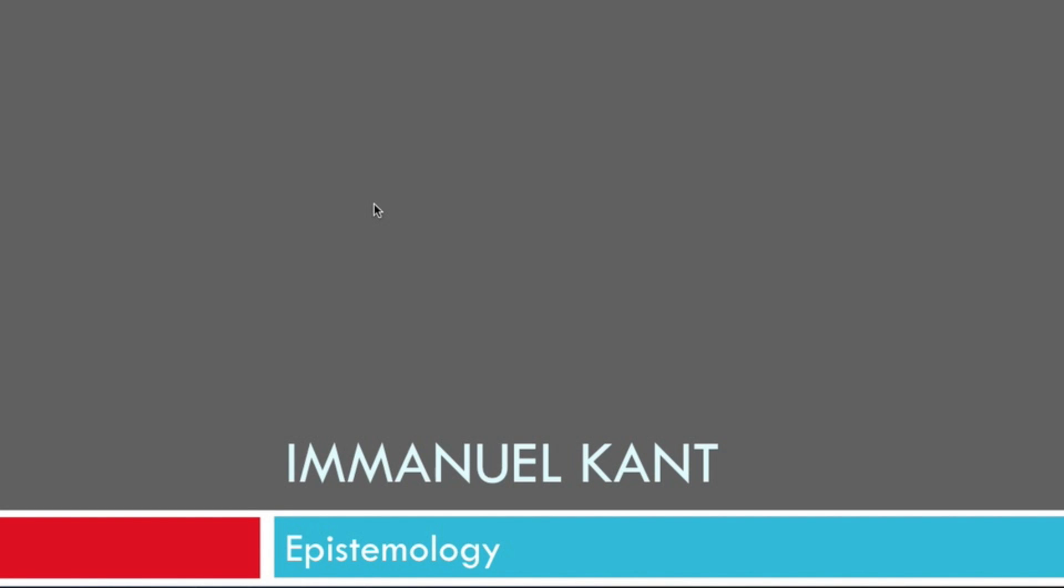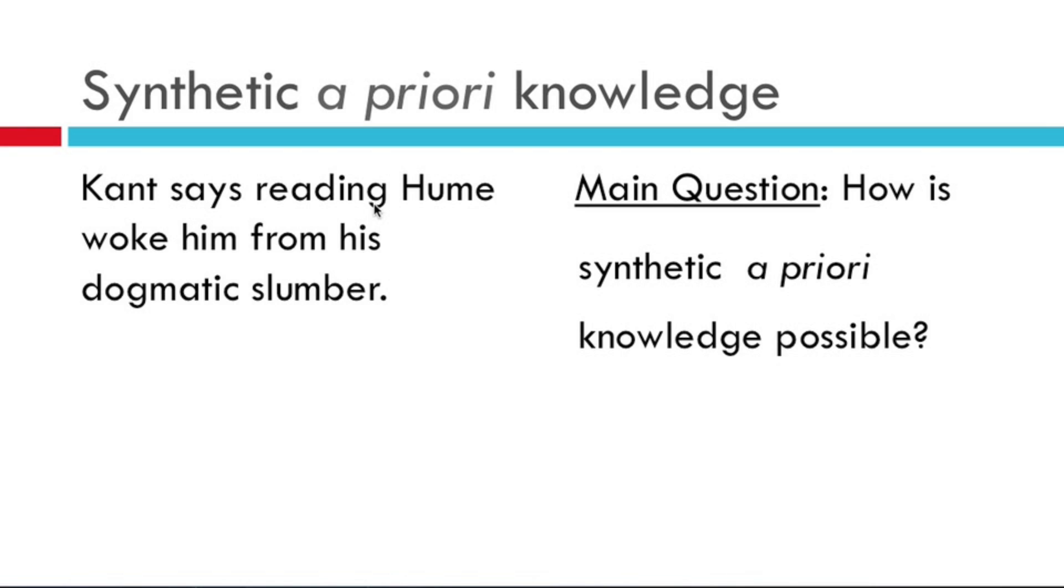Today, we're going to be discussing Immanuel Kant's epistemology. Kant said that his reading of David Hume is what woke him from his dogmatic slumber. So in a very real way, you can see Kant's philosophy of epistemology as a direct response to the debates that have been going on, as we've moved from rationalism to empiricism to David Hume's skepticism of possible knowledge.